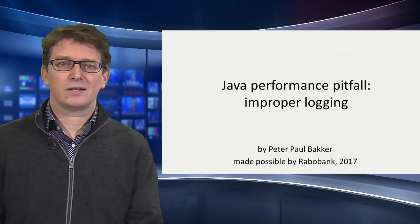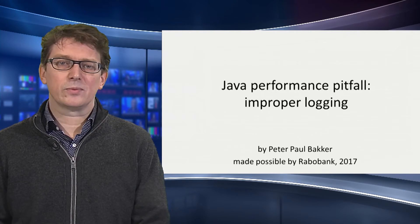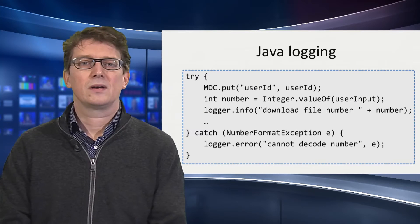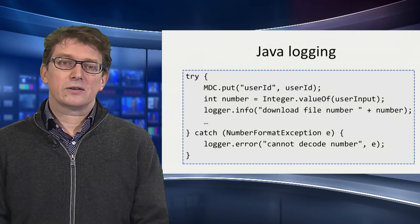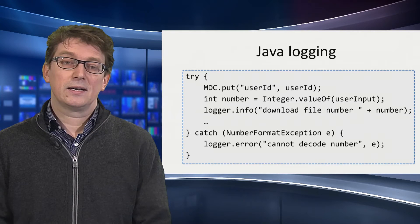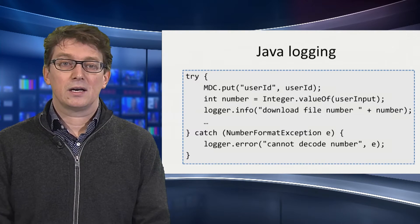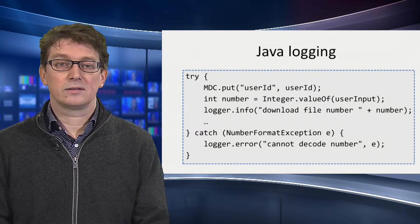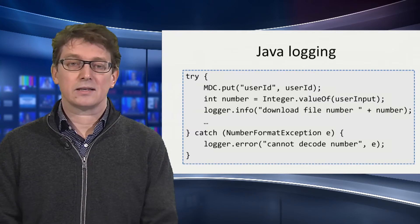Hi and welcome to a new session in the Java Performance Pitfalls series. This one is about improper logging. My name is Peter Paul Bakker. In this session we're talking about Java logging. Here's an example of what Java logging looks like. We see an example of MDC, a logger.info call, and a catch exception that logs an error. We will come back to these lines later in this presentation.